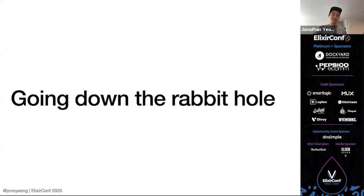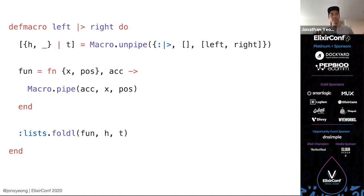The documentation points me to a piece of source code. This macro defines our pipeline operator, and it's pretty small — like five lines. When I first saw this macro I was like, great, I can totally understand this in a matter of hours. Then I looked a little bit closer and realized I had no idea what was going on. Remember, I only have like two months of Elixir experience and as a side project. So let's step through this macro together.